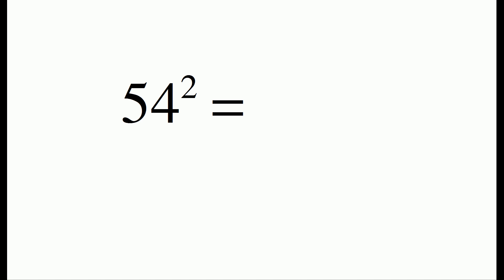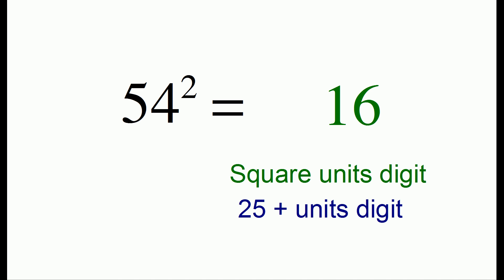For another example, 54 squared, we want to square the unit's digit of 4 to get 16. Then we're going to take 25 plus 4 to get 29. And our answer is 2,916.